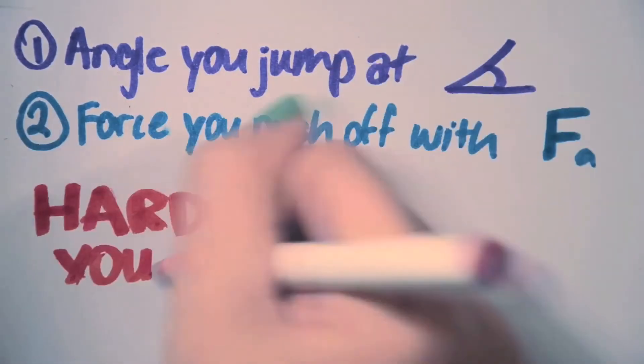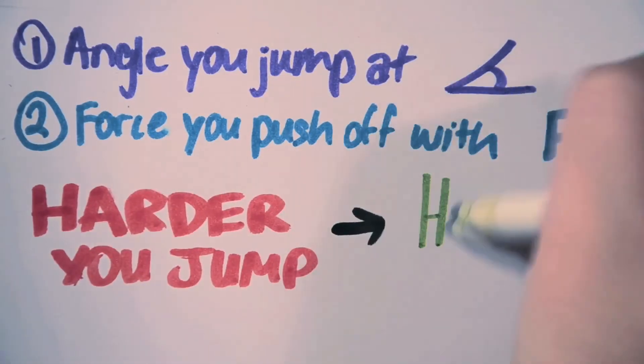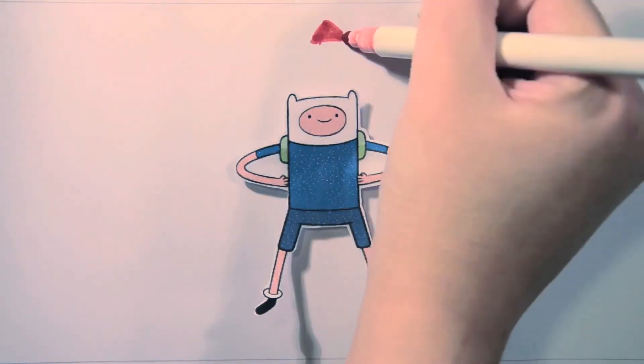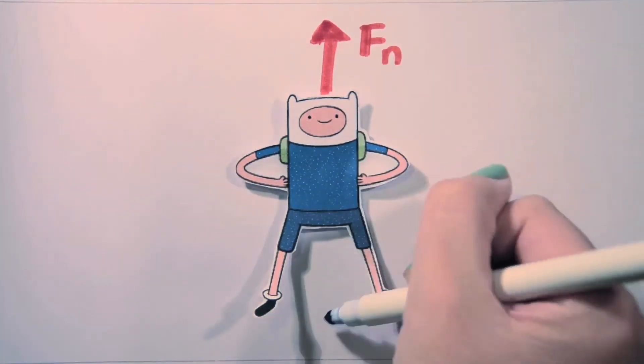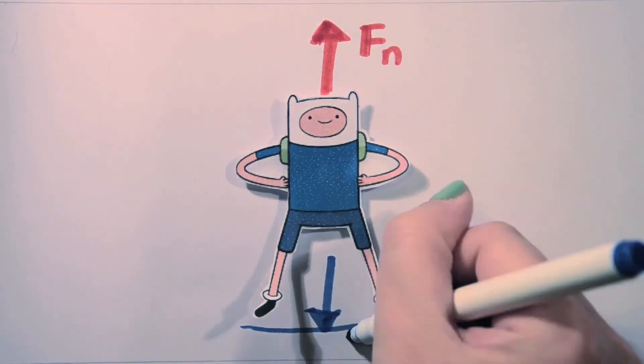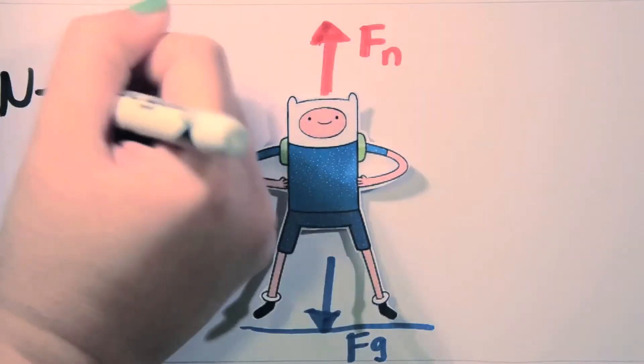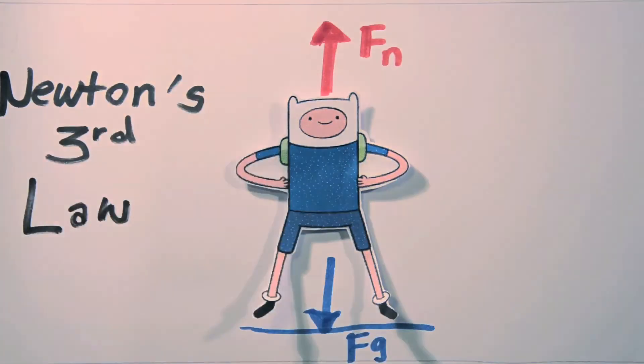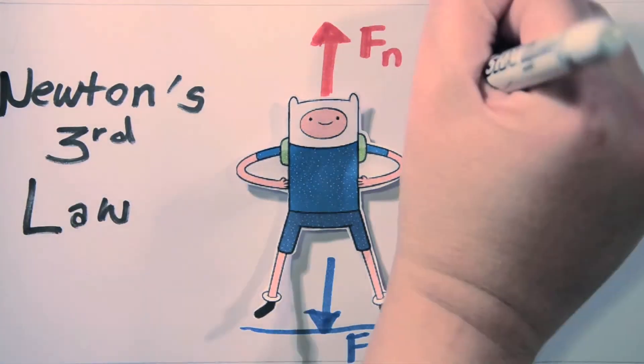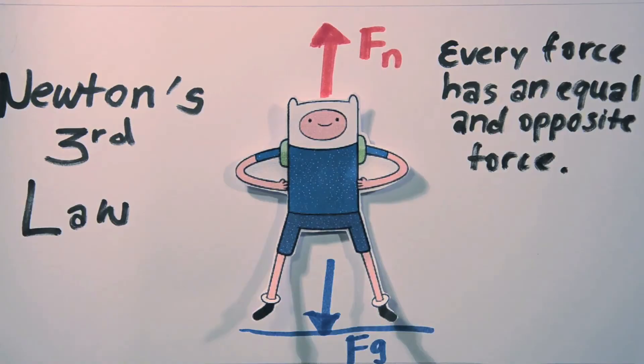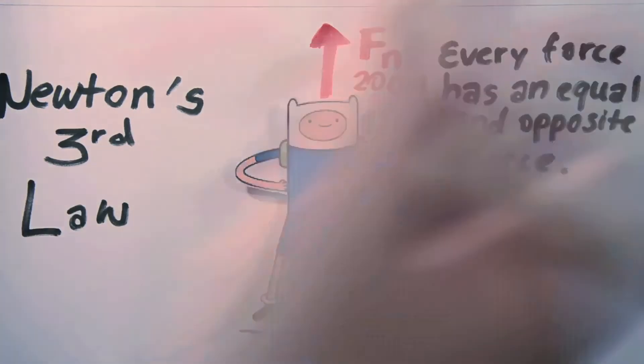The harder you push off the ground, the higher you will jump because the ground will push up on you just as hard. This is because of Newton's third law that states that for every action force for object A on B, there will be a reaction force from object B on A with the same magnitude in opposite direction. Here, the action force is you pushing on the ground, and the reaction force is the ground pushing on you.